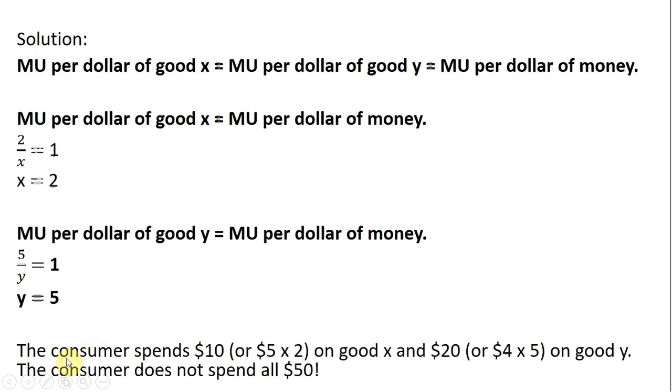And to note here, the consumer spends $10 on good x. The consumer bought 2 units at $5 apiece to get us our $10. And the consumer spent $20 on good y. The consumer buys 5 units of good y at a price of $4 each. And this means that the consumer did not spend all his or her money. The consumer only spent $30 out of the $50 of her budget.